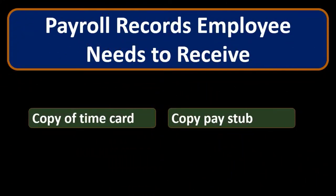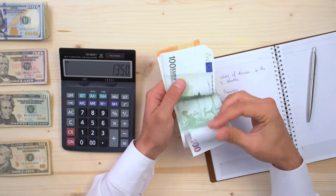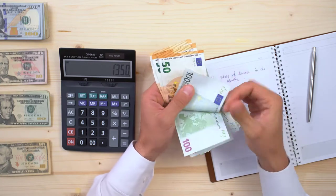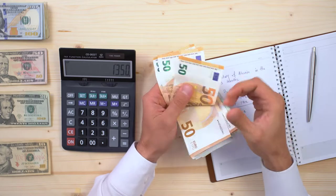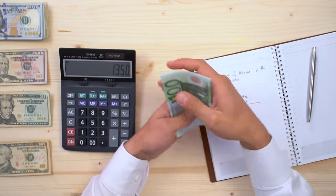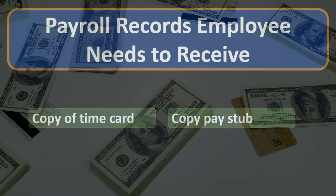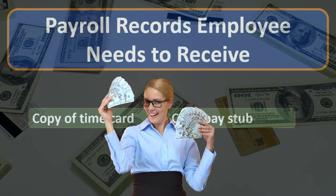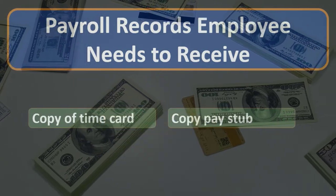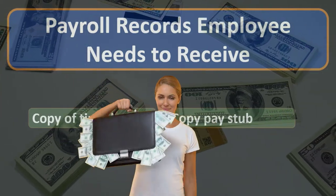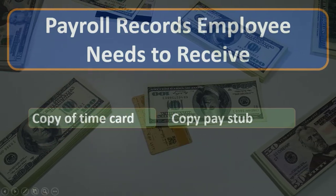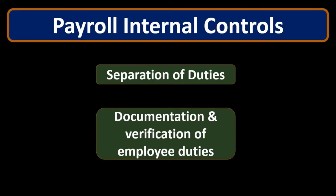The pay stub will usually have the net pay and the gross pay for the time period, along with the deductions that were withheld, so the employee can see how much they earned gross, how much was taken out, what it was taken out for, and the net check they are actually receiving. It will also typically show that information as a year-to-date figure as well as just for the particular pay period.